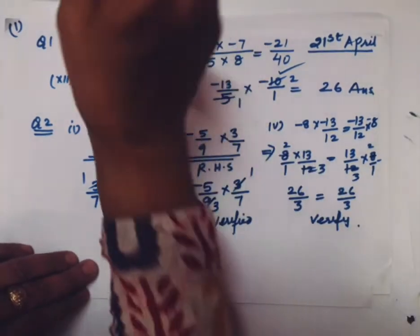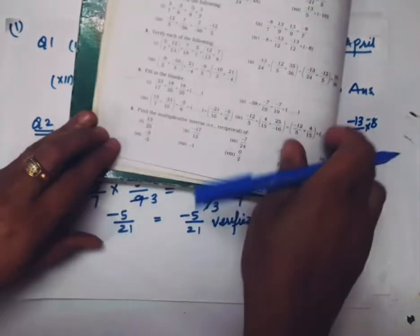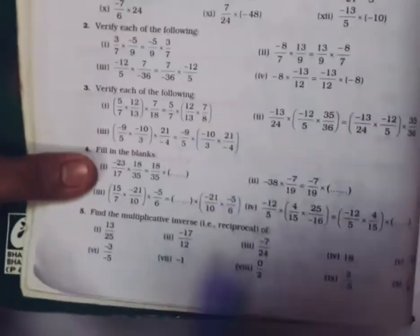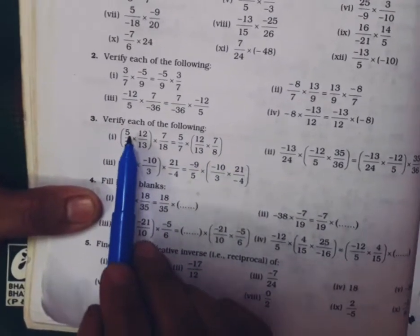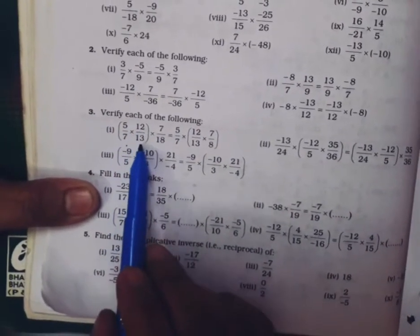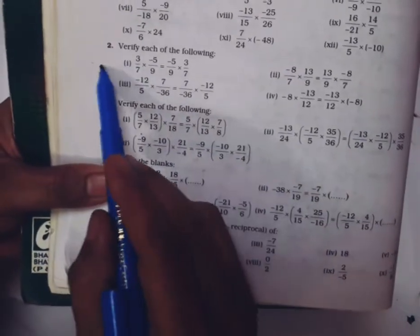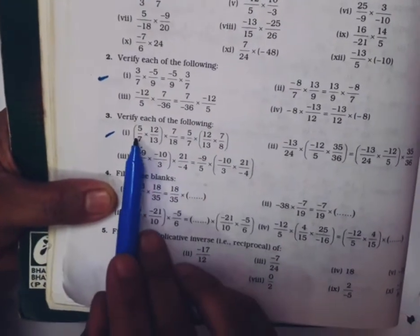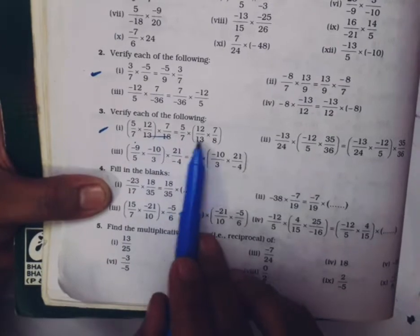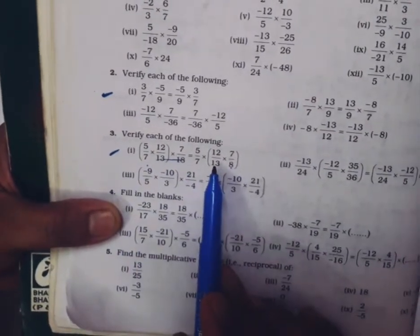Question number 3. Here again it is verify each of the following. Here special attention should be given that one rational number times second rational number times third rational number. This is associative property. Previously commutative property was there. Here associative property is there. You have three numbers here, same three numbers here. We have only changed order. And after changing order, we have to verify whether answers are equal or not.